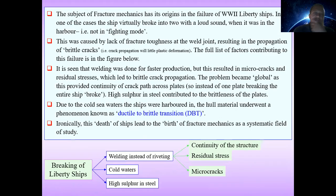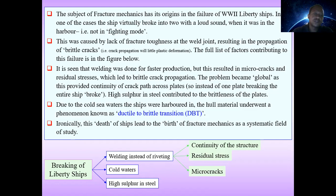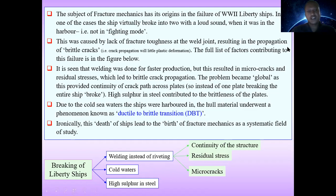The subject of fracture mechanics has its origin in the failure of World War II Liberty ships. In one case, a ship virtually broke into two pieces with a loud sound while it was in harbor. This was caused by the lack of fracture toughness at the weld joint, resulting in brittle crack propagation. The reasons for breaking of the ships include welding instead of riveting, the existence of cold water, and high sulfur content in the steel.